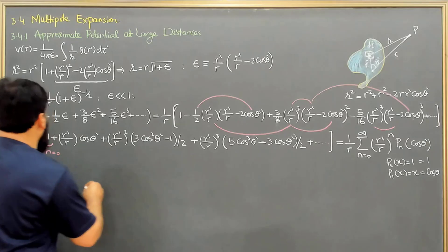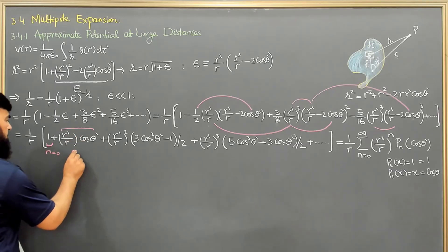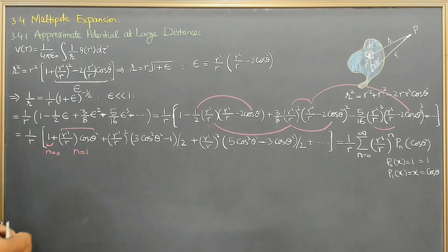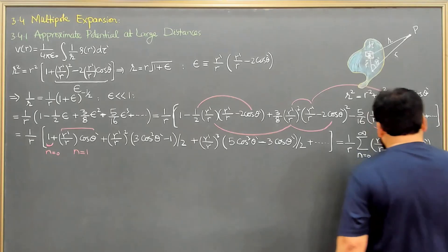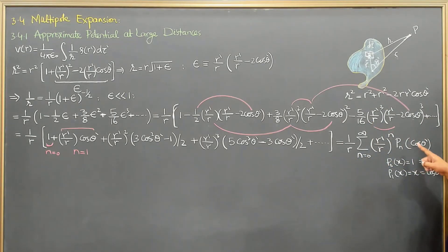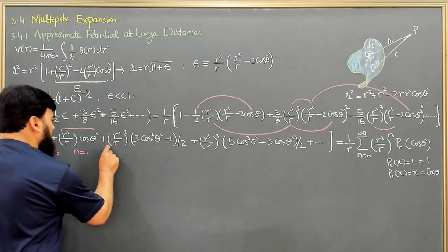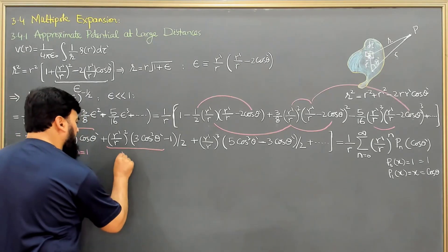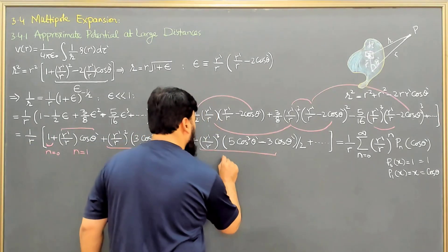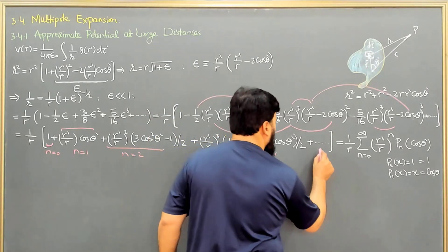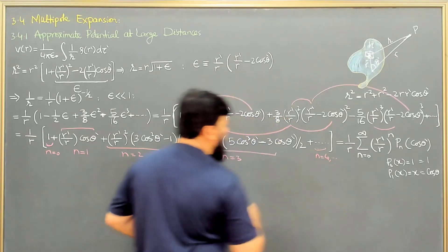So P_1 of cos theta equals cos theta, giving us the n equals 1 term with cos theta prime. The subsequent terms are the n equals 2 term, the n equals 3 term, and so on for n equals 4 and beyond.